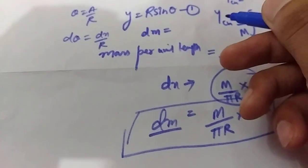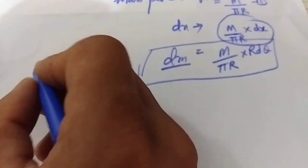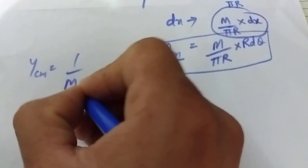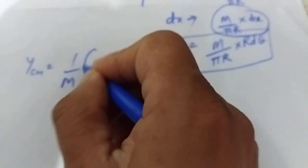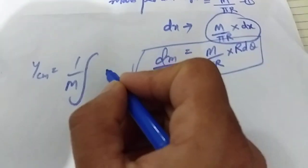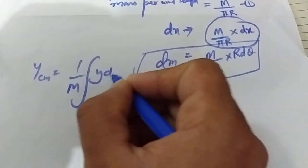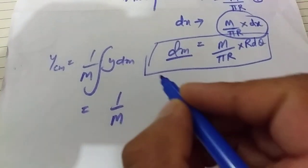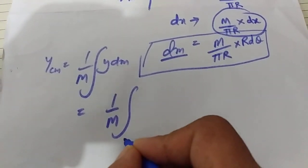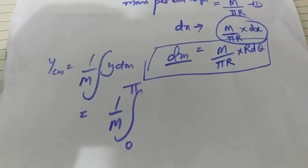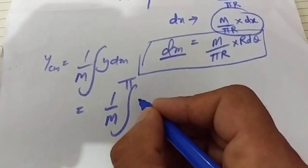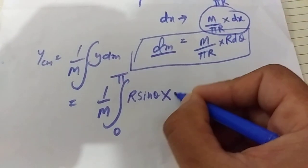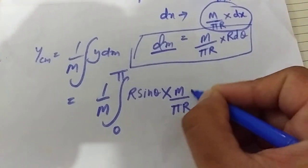Now we use the expression for y-coordinate of center of mass. y_cm = (1/m) ∫ y dm. Substituting the values, with the elements on the circumference going from 0 to π, we get: y_cm = (1/m) ∫₀^π (R sin θ) × (m/π × R dθ).